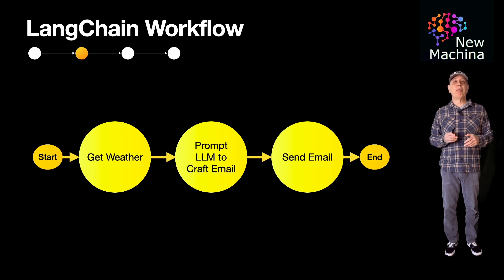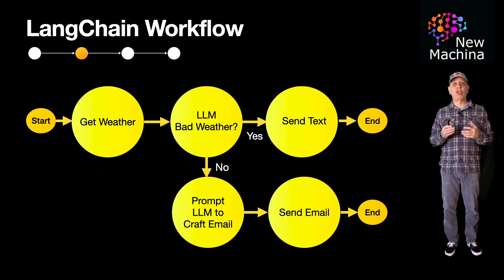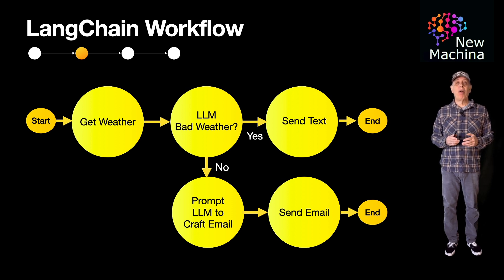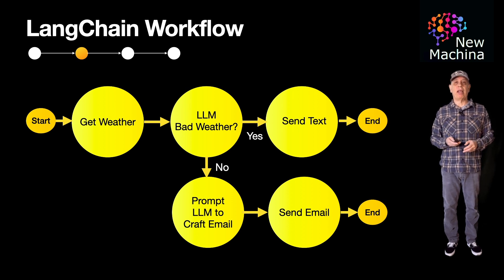Now let's add a bit more complexity to the workflow. In this second modified workflow, we get the weather for a city. Next, we prompt the LLM to determine if the weather is good or bad. If it's bad, a text is sent; otherwise, an email is sent. The modified workflow has some simple branching, and as mentioned earlier, LangChain does have support for simple branching, so you could implement this easily with LangChain.